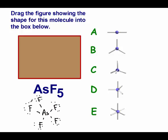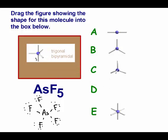The next structure has five things coming off, making it trigonal bipyramidal. Notice the triangle in the center with top and bottom pyramids.